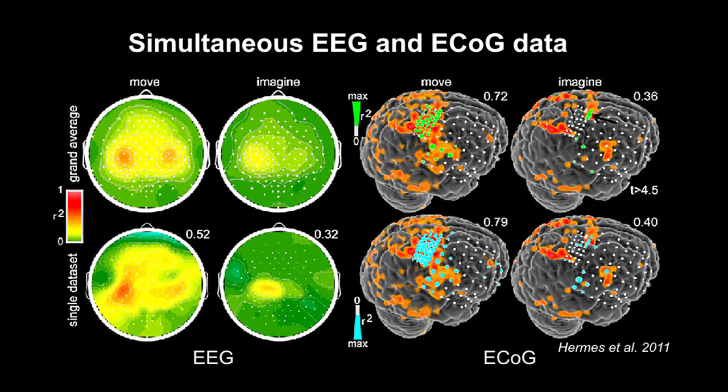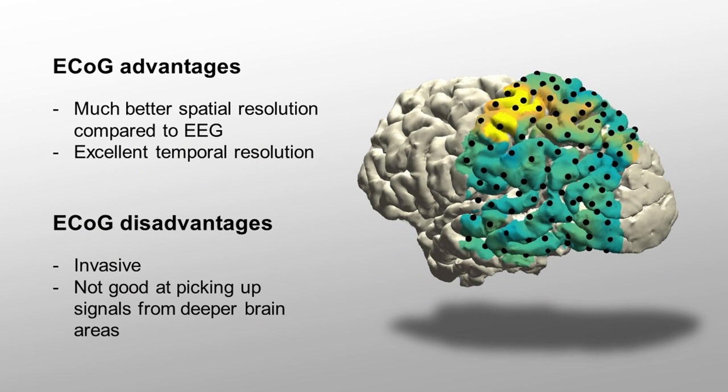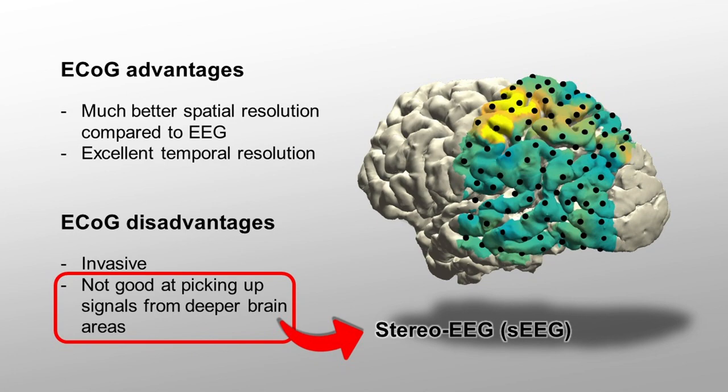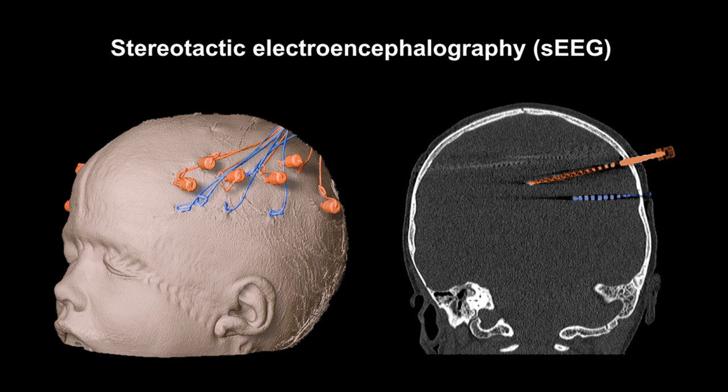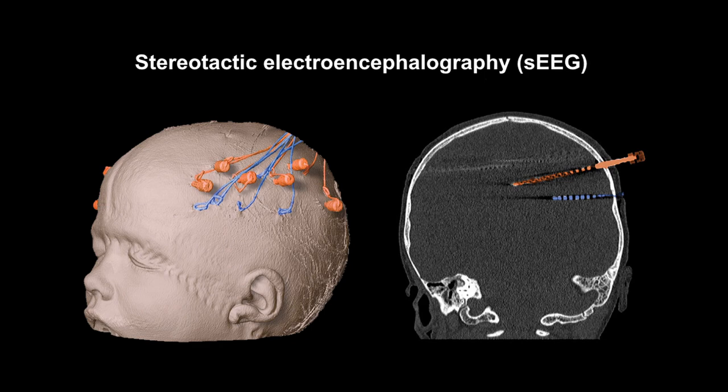Although ECOG is spatially superior to EEG and MEG, it is certainly not perfect. Since ECOG is placed on top of the cortex, it is very limited in recording deeper parts of the brain. As such, it is not uncommon that patients receive both ECOG and stereo EEG, or SEEG, implants. SEEG records signals from inside the brain through electrodes placed on thin leads. These leads have a similar thickness as an uncooked piece of spaghetti and can be inserted into the brain without causing too much damage, allowing signals from deeper brain regions to be recorded.